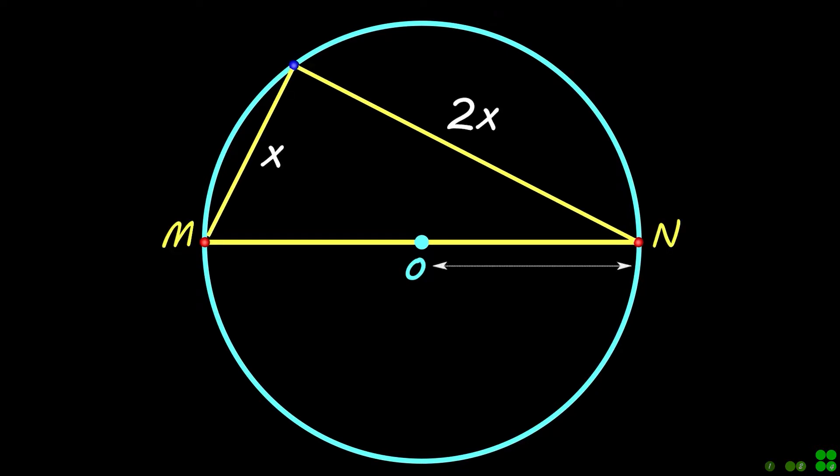Consider a circle with center O and diameter MN. The point P is on the circle.